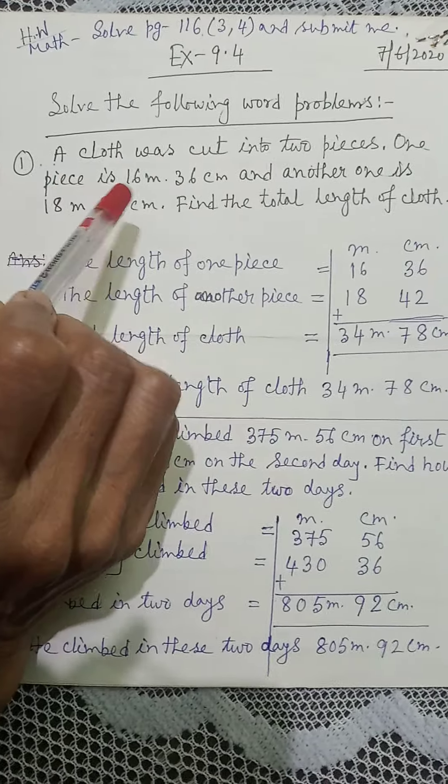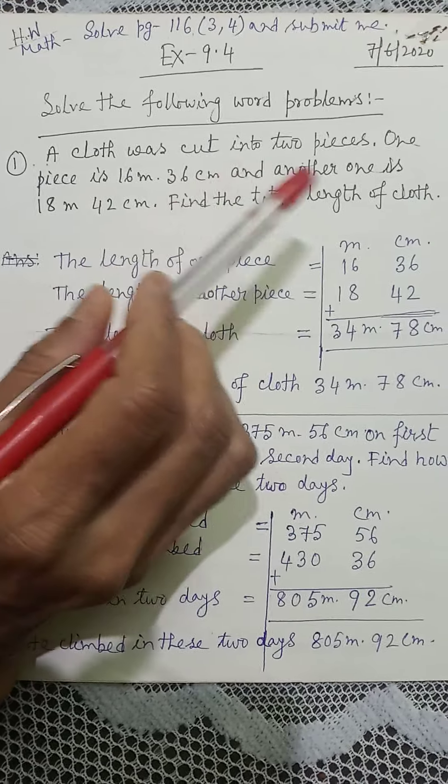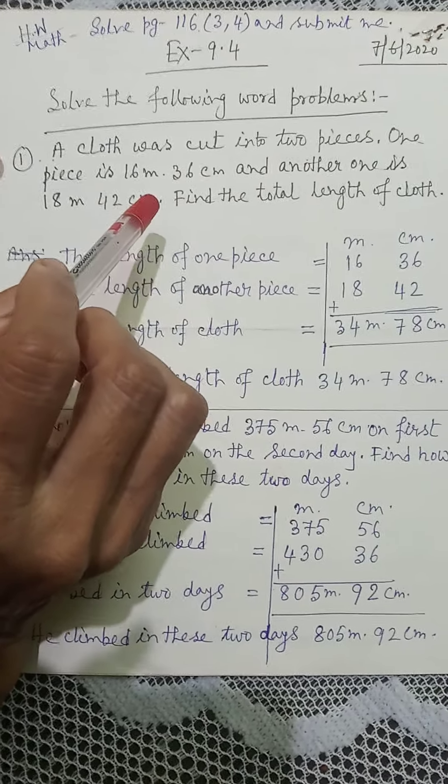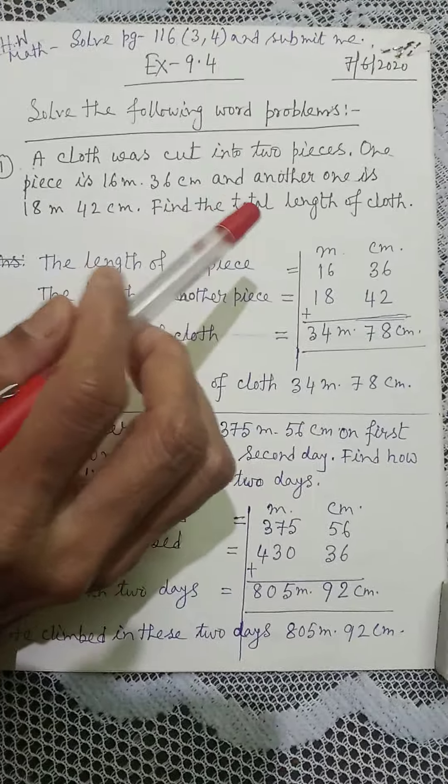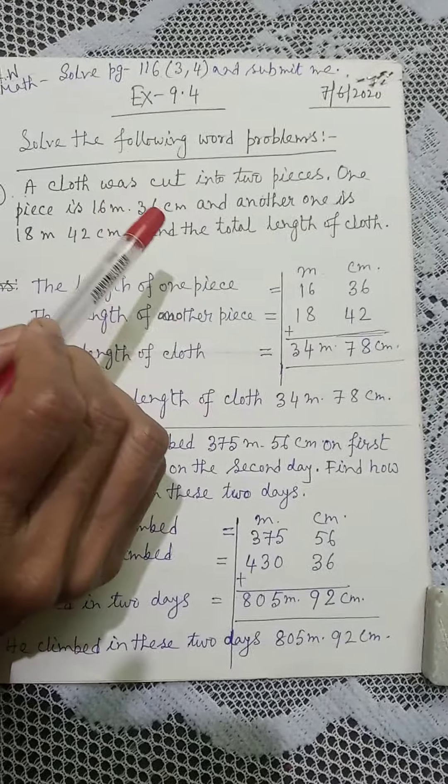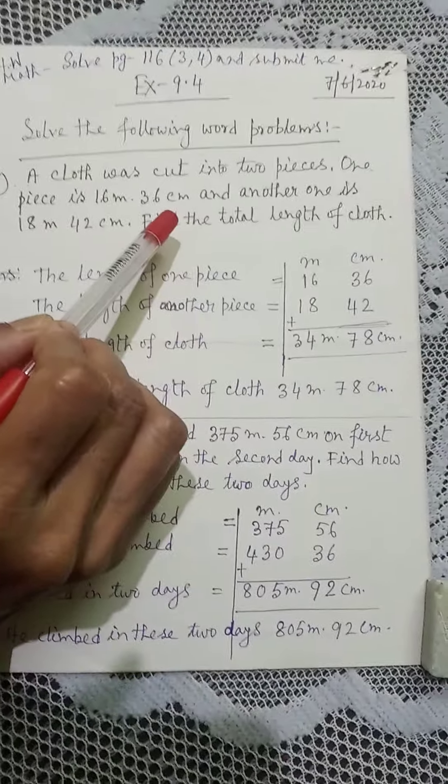One piece is 8 m and another piece is 7 m, find the total length of cloth. Two pieces is how much? 8 and 7, we will add.